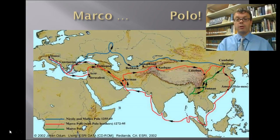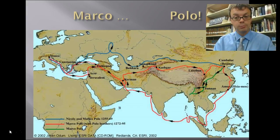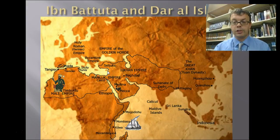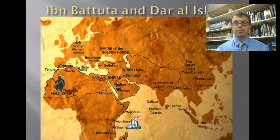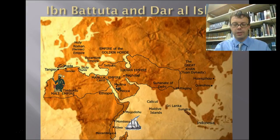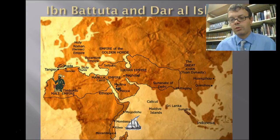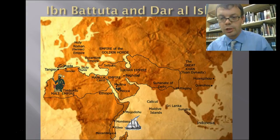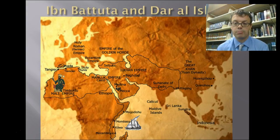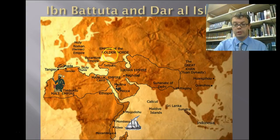So that's our traveler number one, Marco Polo. Our next traveler is Ibn Battuta. Ibn Battuta actually travels further than Marco Polo — that's why we should play his name like a game. Let's give a little history on him.